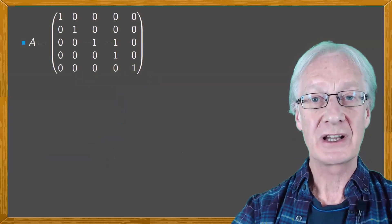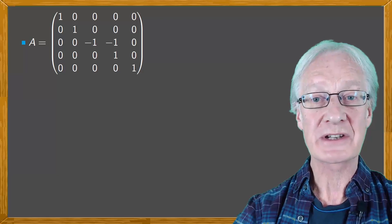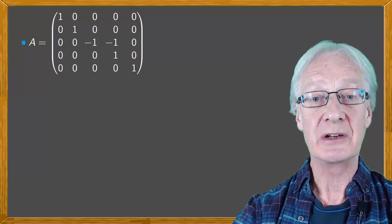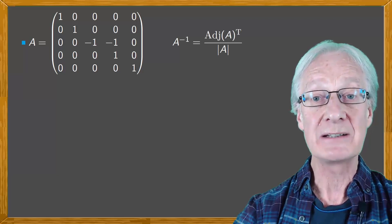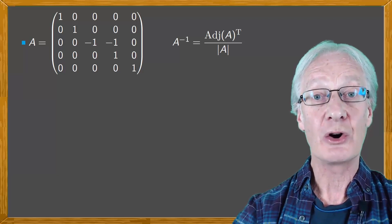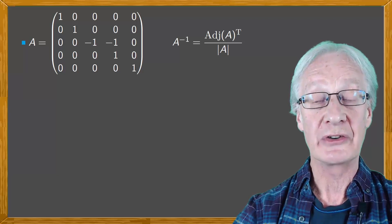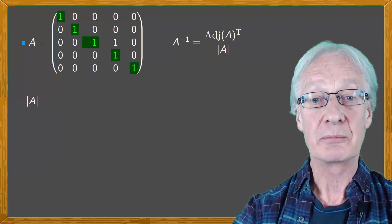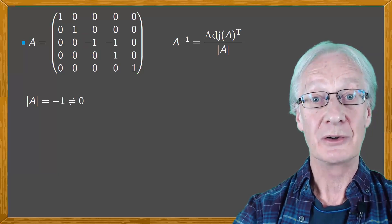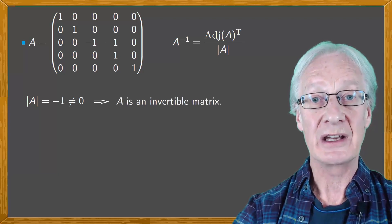We're going to calculate the inverse of the 5×5 matrix A shown here. Suppose we decide to do it using determinants. The inverse of a matrix is equal to the transpose of its adjoint matrix divided by the determinant. A matrix is invertible if and only if its determinant is non-zero. In our case, it's an upper triangular matrix and the determinant is the product of the elements of the diagonal. This product is minus 1, which is non-zero, so A is an invertible matrix.